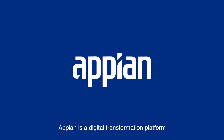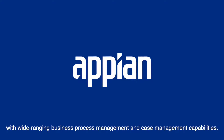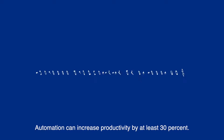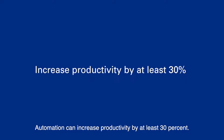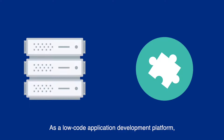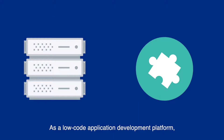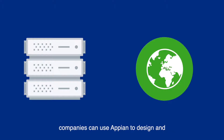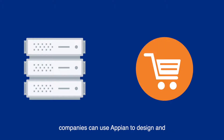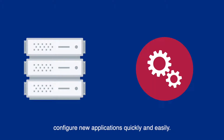Appian is a digital transformation platform with wide-ranging business process management and case management capabilities. Automation can increase productivity by at least 30%. As a low-code application development platform, companies can use Appian to design and configure new applications quickly and easily.